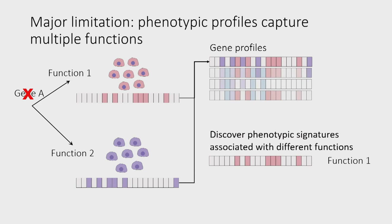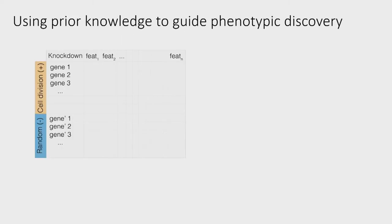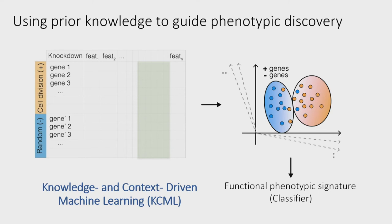The question is how we can do that. After thinking about this for a long time, I came up with the idea to use our prior knowledge to guide phenotypic discovery. For example, we can use gene ontology — what we know about genes involved in cell division — and use this to find which features are affected by cell division genes, then train a classifier that separates cell division genes from a random set of genes. This classifier gives us a functional phenotypic signature that we can apply to see what other genes result in a similar phenotype, allowing us to predict that those genes have a similar function. I call this approach knowledge and context-driven machine learning, or KCML.